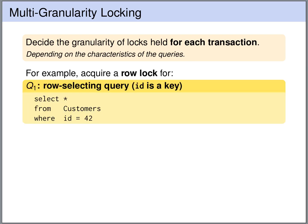Let's look at our first query. It selects from the customer table the customer with ID 42, and the ID is a key for this table, so we are selecting a single row. For such a row-selecting query, we will typically choose a row lock. Why would we want to lock the entire table if we just look at a single row or just a few rows?